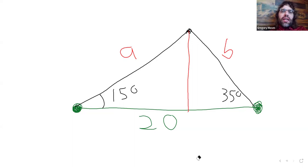But the thing is that if we can find one of the sides of the triangle, if we can find a, for example, then we can find this height using right triangle trigonometry.